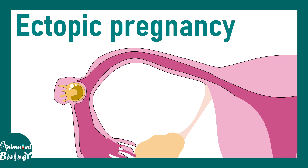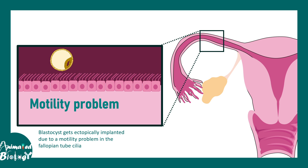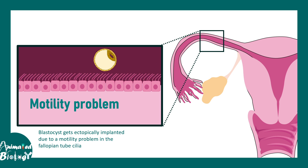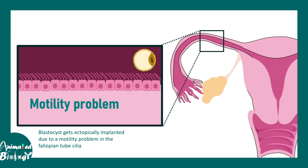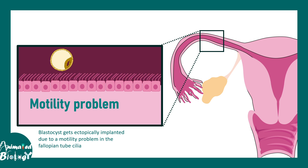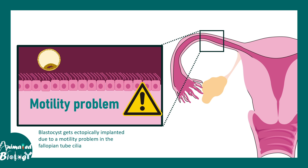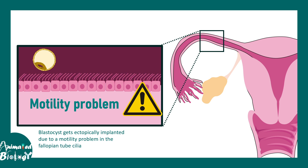In ectopic pregnancy, blastocyst implantation happens in an abnormal location. The key question is why the blastocyst cannot reach the uterine cavity. This is often due to a motility problem in the fallopian tube — there are cilia, hair-like projections on the fallopian tube cells, which normally propel the blastocyst towards the uterine cavity. When this function is altered or inadequate, the blastocyst slows down and implants into the fallopian tube instead.